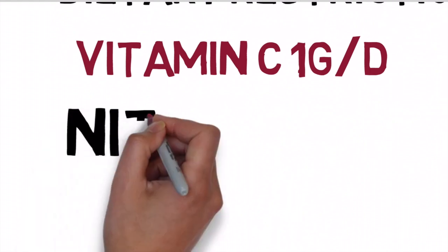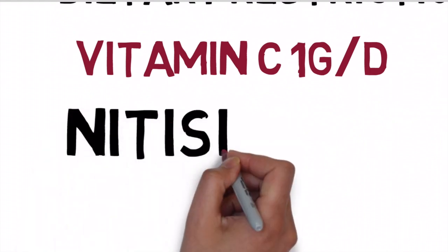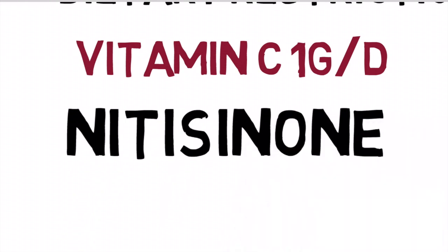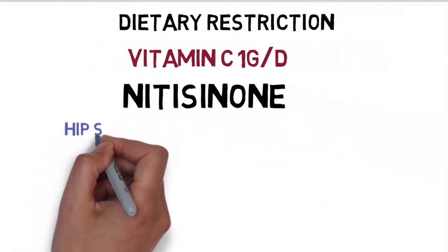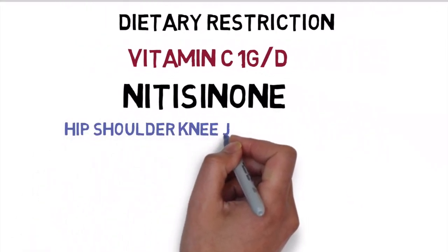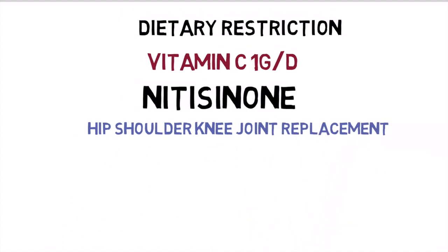Limited use of nitisinone has been reported. Nitisinone is an inhibitor of 4-hydroxyphenylpyruvate dioxygenase, which mediates formation of homogentisic acid, resulting in less homogentisic acid being formed. Urinary homogentisic acid excretion was markedly reduced by nitisinone, but safety of prolonged use remains an open question. Older individuals may require removal of lumbar discs, and hip, shoulder, or knee joint replacement may be necessary.